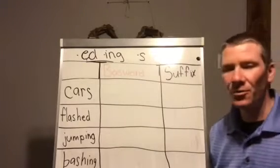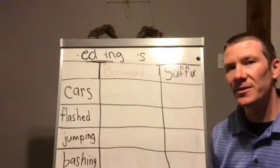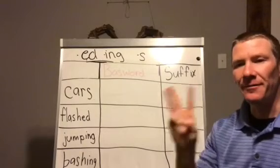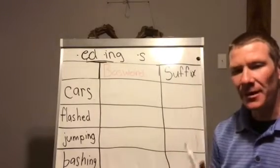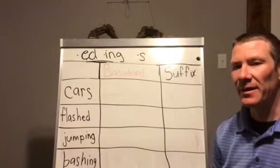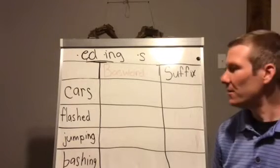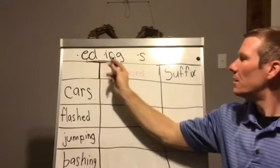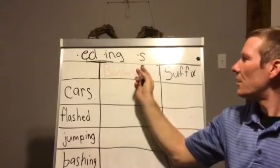Hey guys, we'll be talking about base words and suffixes in this video. We have three main suffixes that we use. A suffix is something we put at the end of the word to change the meaning. So here's my suffix: we have -ed, -ing, and -s.